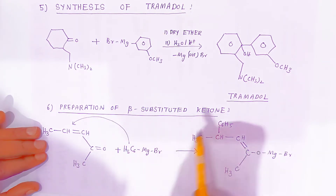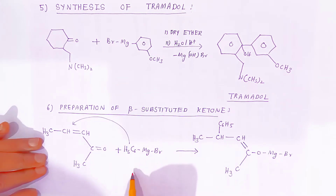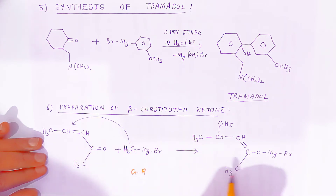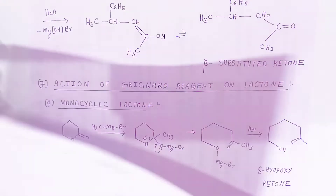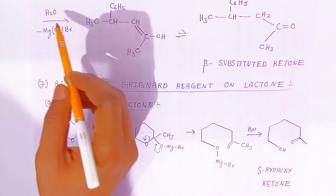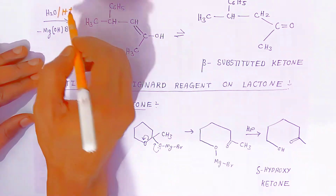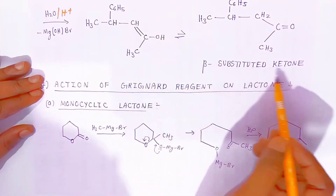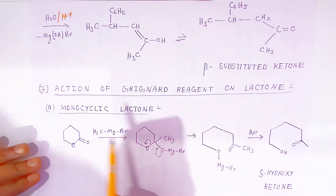Preparation of beta-substituted ketone: the Grignard reagent reacts with a specific compound to form an addition product. On acidic hydrolysis, a compound is eliminated and the addition product is converted into a beta-substituted ketone. This is the beta-substituted ketone product.